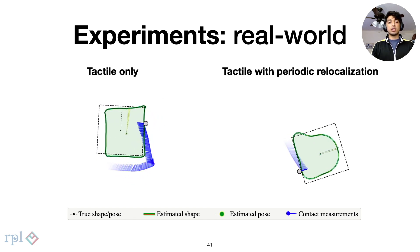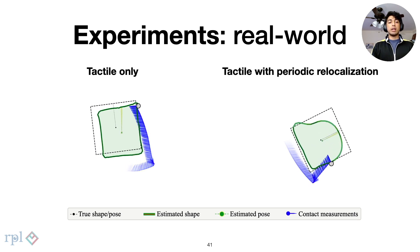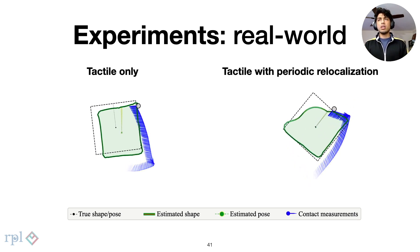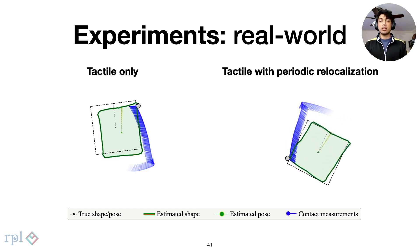We conduct a second experiment where we periodically add global pose estimates to correct for drift. This can be seen as a proxy for visual tracking in a difficult multimodal task. In that case, we see better shape estimates.